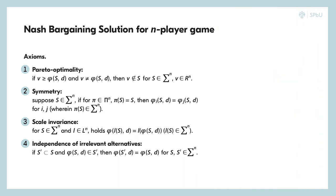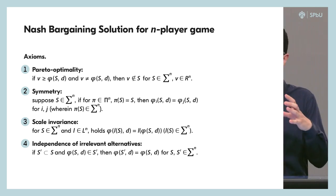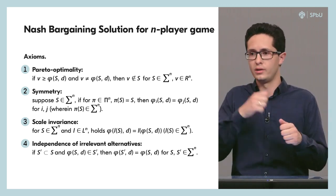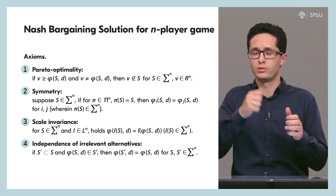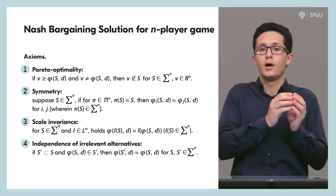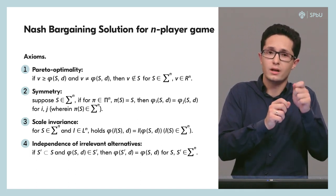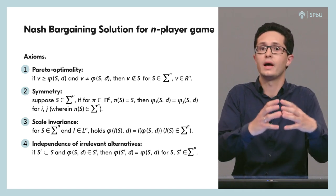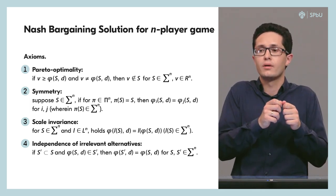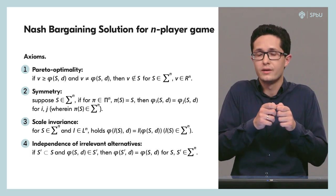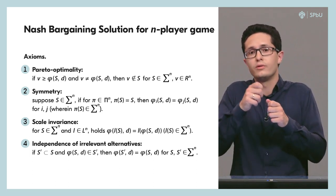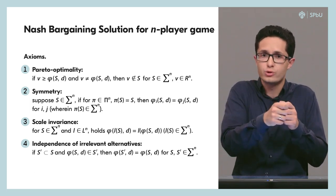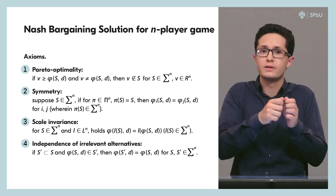The third axiom is called scale invariance. It says that if we transform the bargaining set using a linear operator — for example, expanding it by multiplication by a constant — then the bargaining solution on the expanded set can be obtained by applying that same linear operator to the bargaining solution calculated on the initial set.